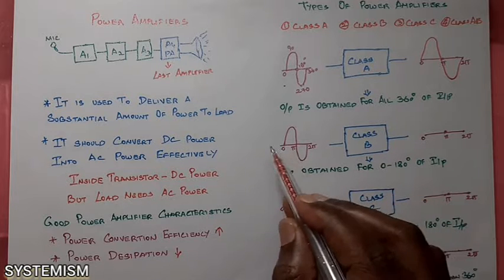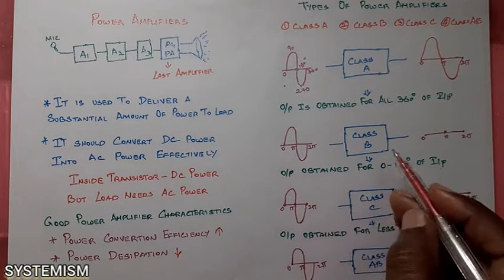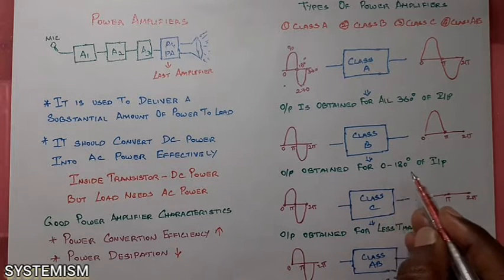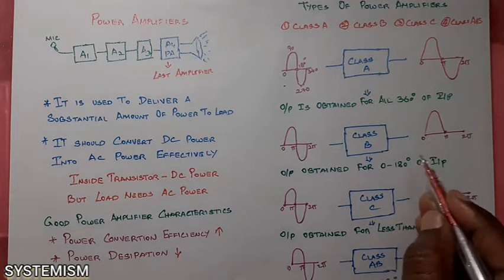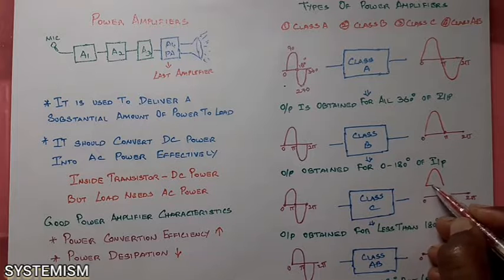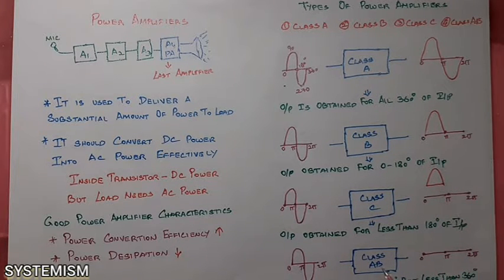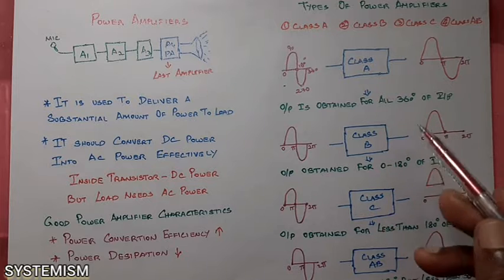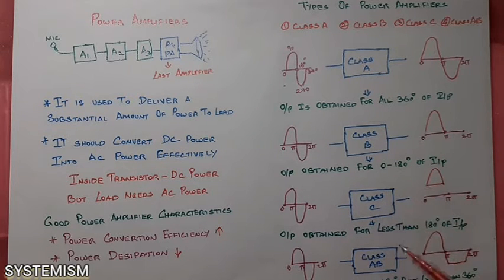What is meant by a class B amplifier? You are providing the same input for all 360 degrees, but your output will be obtained only for 180 degrees of your input signal. For class C amplifier, output is obtained for less than 180 degrees of your input signal. For class AB amplifier, the output will be more than 180 degrees but less than 360 degrees.